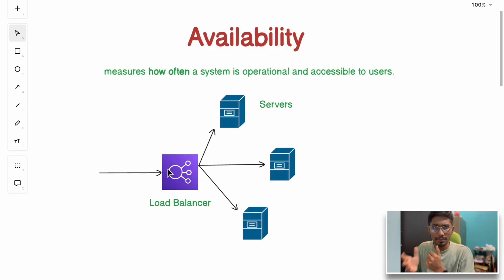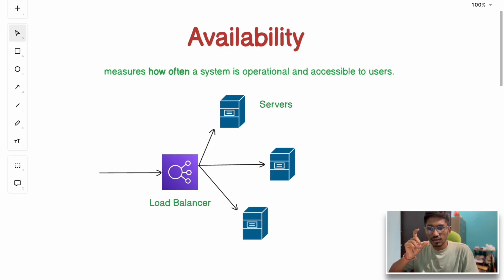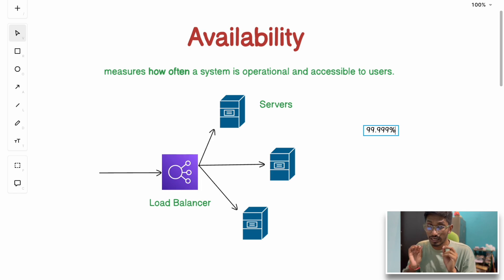The next term is availability. You've probably seen websites showing 'Service Unavailable,' '503 Temporarily Unavailable,' or 'Bad Gateway' errors — those are availability issues. Technically, availability measures how often a system is operationally accessible to users. Google Search, for example, has 99.999% availability, also known as 'five nines,' meaning it's only down for a few minutes per year. It's very hard to achieve but possible with the right strategies.